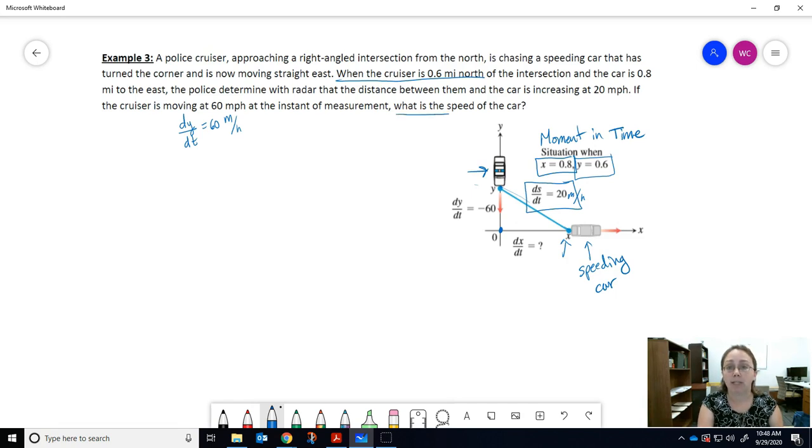They want to know what is the speed of the car. The speed of the car is the rate of change of its distance, which we're measuring with x for the speeding car with respect to time. This is what you're trying to find. So they're giving you information about y, dy/dt, and they're asking you to find information about dx/dt. So you need to relate x and y together.